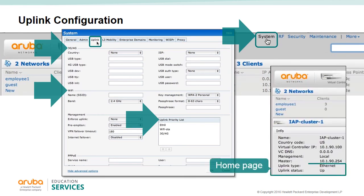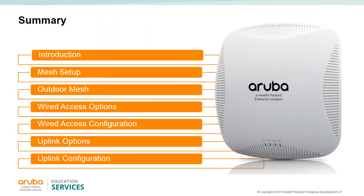From the home page you can see this IAP's uplink type and status. In this module we covered: mesh setup, outdoor mesh options, wired access options for the various Ethernet ports that IAPs can have, wired access configuration, and the three uplink options — Ethernet 0 used by default, plus 3G/4G and Wi-Fi — and how to configure those particular uplink types.